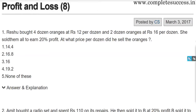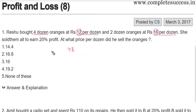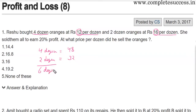Rishi bought four dozens oranges at Rs.12 per dozen and two dozens at Rs.16 per dozen. So four dozens cost 48 rupees and two dozens cost 32 rupees. Overall, he has six dozens for 80 rupees total.